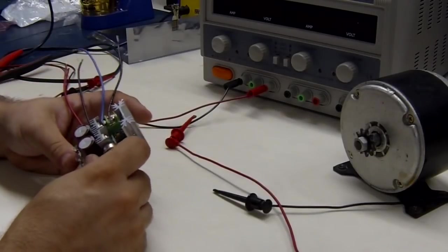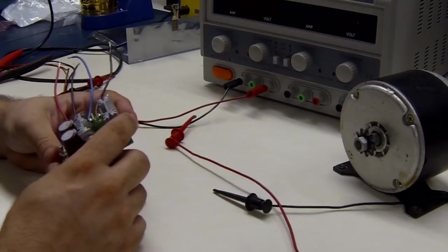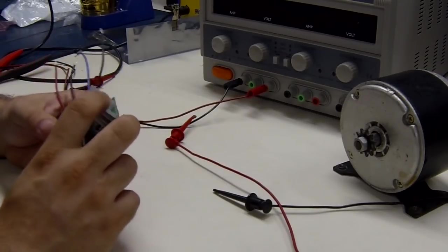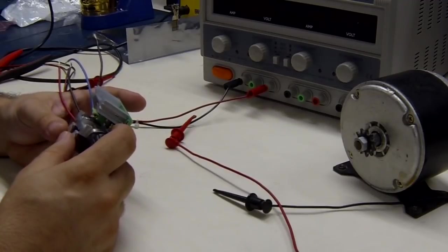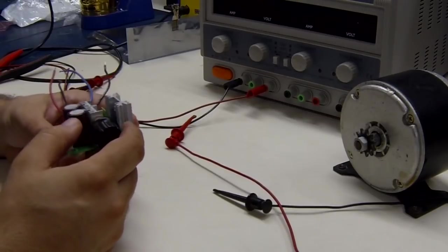Alright, today we're going to be taking a look at the Rioran 12 to 40 volt 10 amp pulse width modulated motor controller. Really nice looking product. A lot of name brand components on there. I see a TI 555 timer for the pulse width modulation.